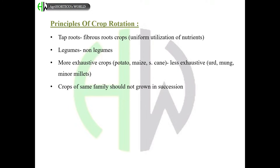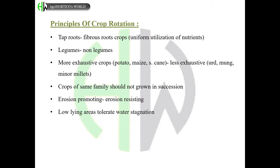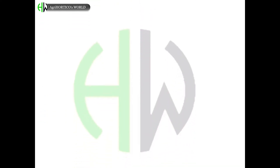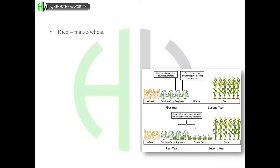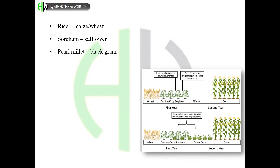Erosion-promoting and erosion-resisting crops should be considered; low-lying areas are tolerant to water stagnation. The rotation should be useful for the farmer's financial situation along with soil and climatic situations, and it is always demand-based. Examples of crop rotation include: rice followed by maize or wheat; sorghum with safflower; pearl millet with black gram; sesame and bengal gram; wheat with mustard; and maize rotation with safflower, wheat, potato, or barley.